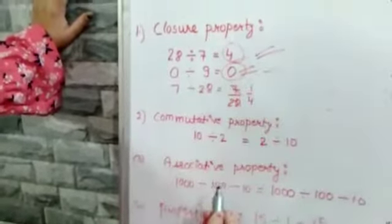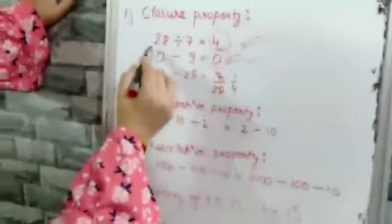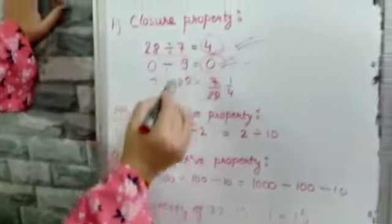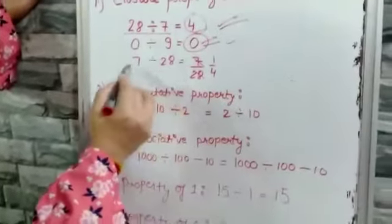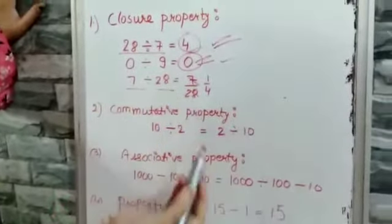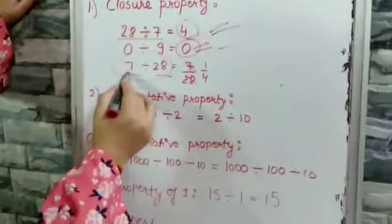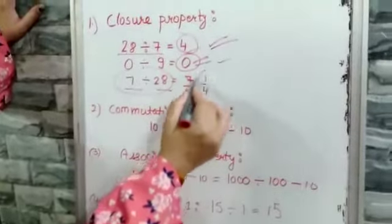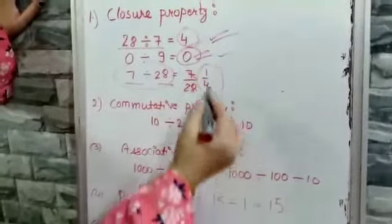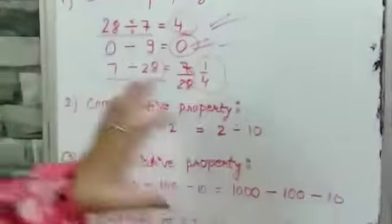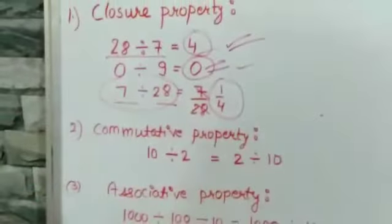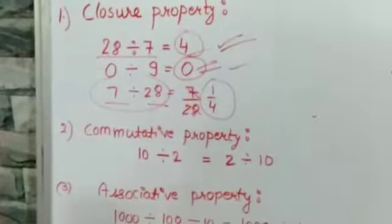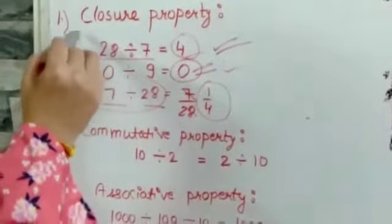In this example, I have reversed the order. Instead of taking 28 as a dividend, here I have taken 28 as a divisor. Both 7 and 28, we all know both of them are whole numbers. 7 divided by 28 is going to give you either a decimal or a fraction. I have already told you fractions and decimals are not under the category of whole numbers. That means the closure property does not exist under division.